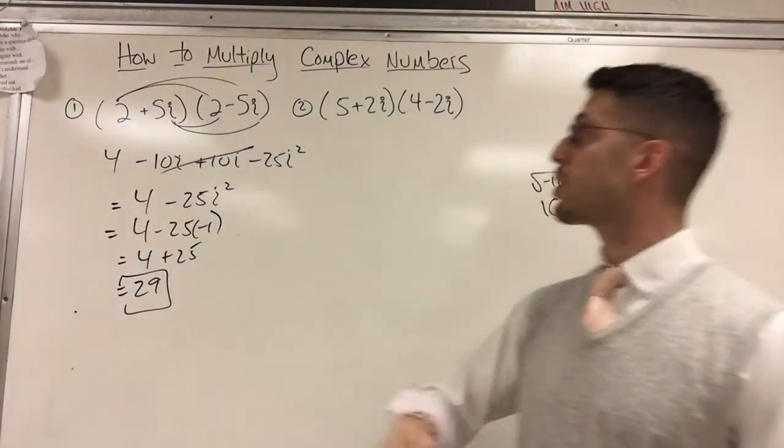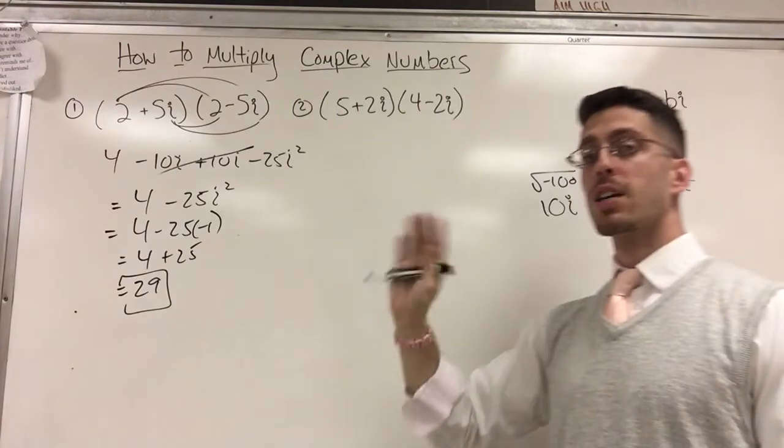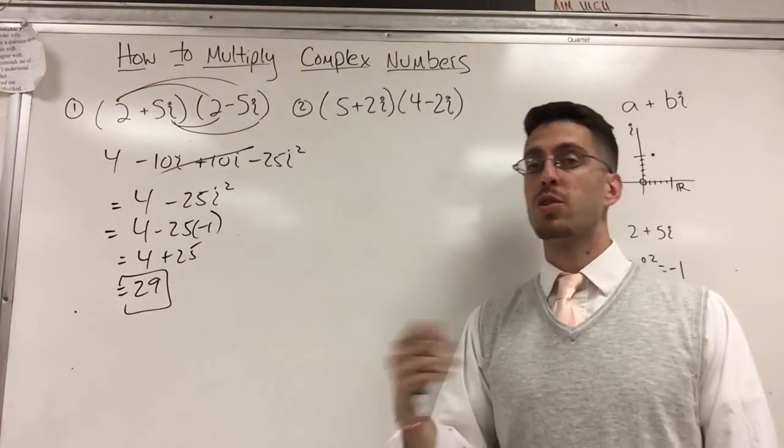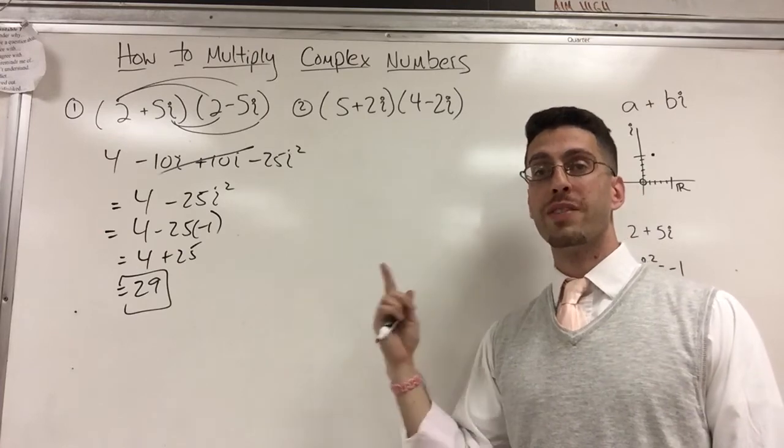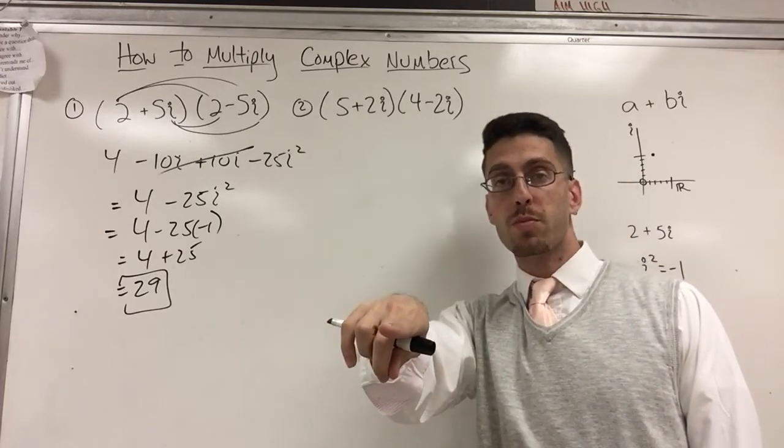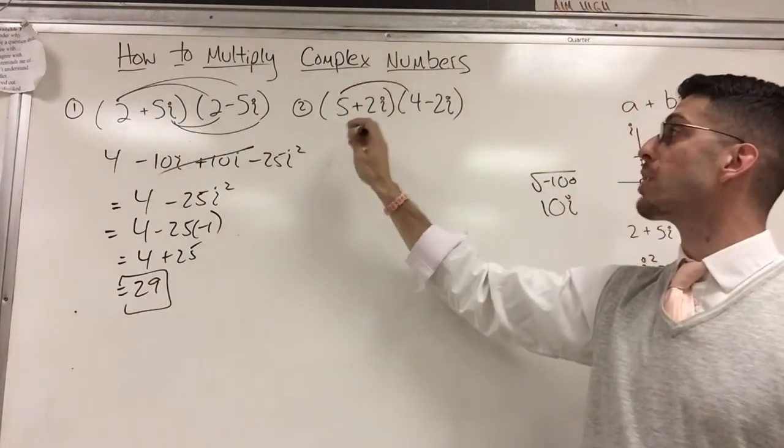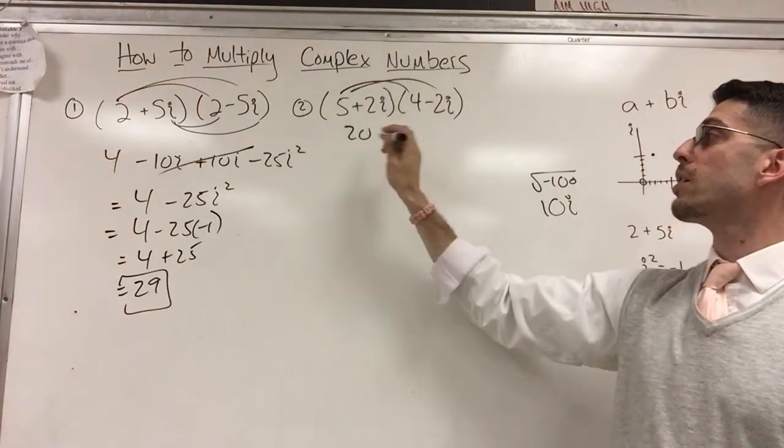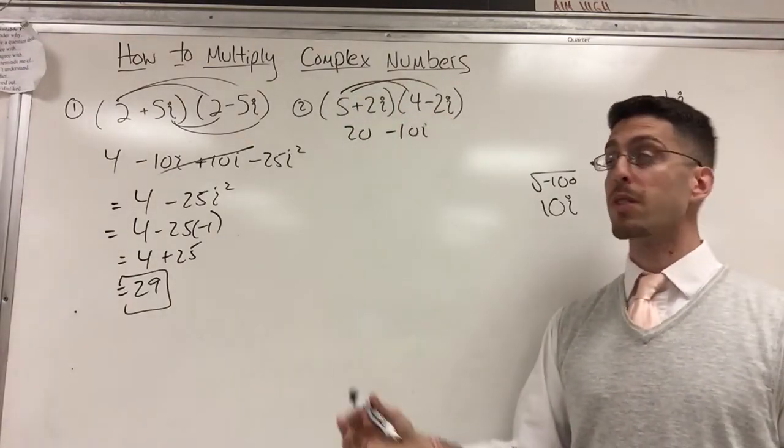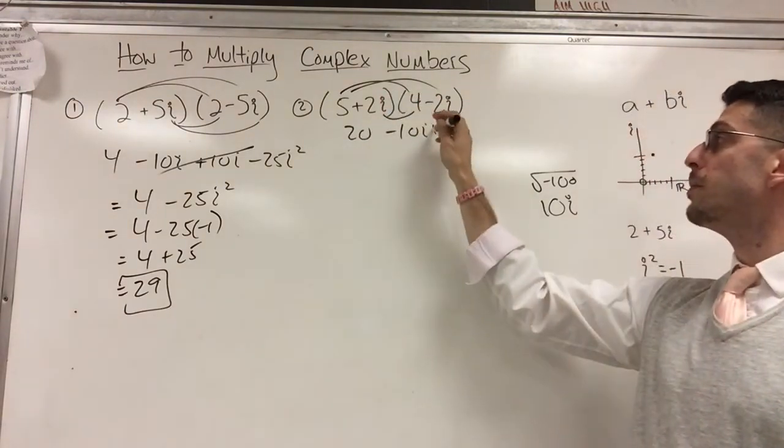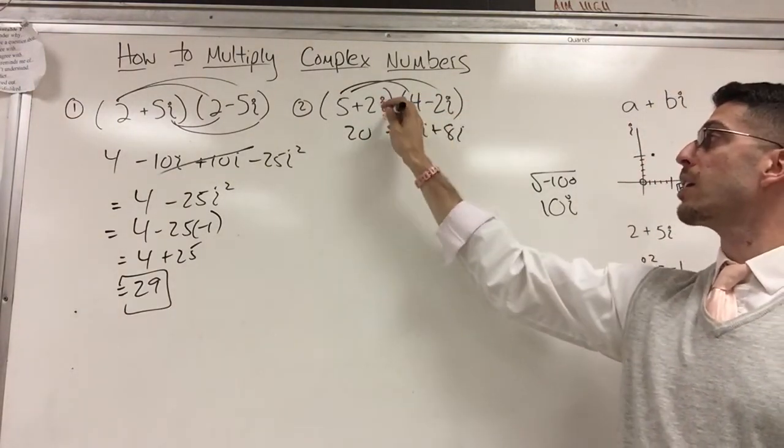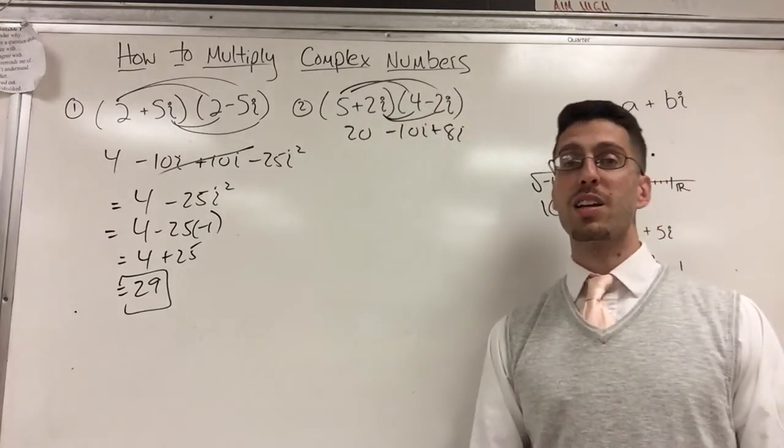Let's move on. Here, non-conjugates, just regular complex numbers. I just want you to see it through and see what you get. Try it on your own and then check my answer. So utilize that pause button. Here we go. Five times four is 20, negative 10i.